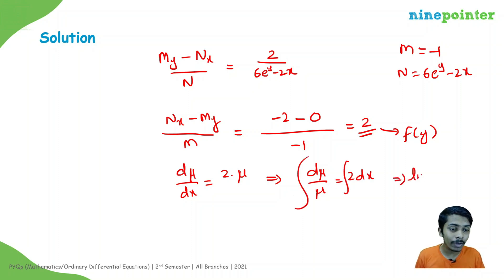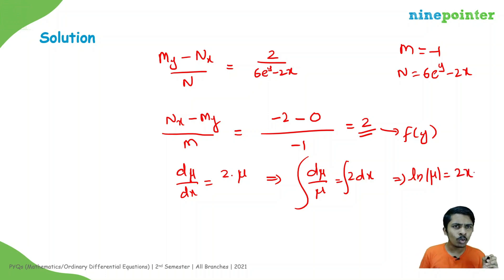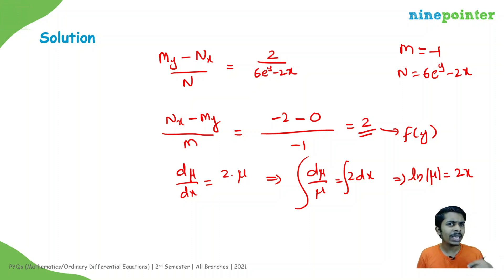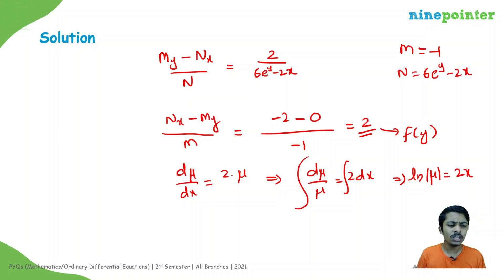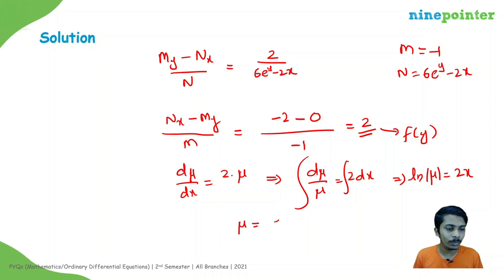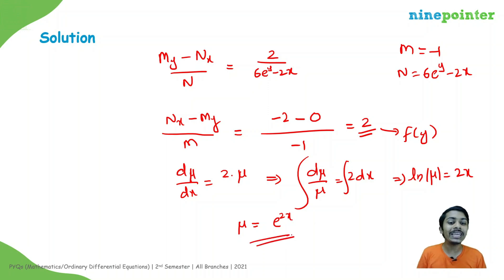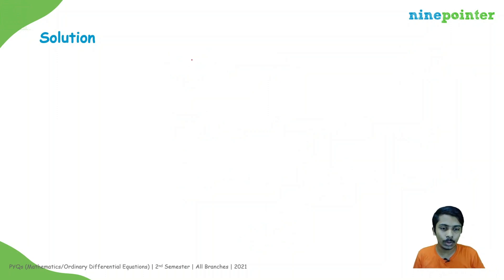Using dμ/dy = 2μ, we solve by variable separable: dμ/μ = 2 dy. Integrating both sides gives ln|μ| = 2y, so the integrating factor is μ = e^(2y). We don't need a constant here since any integrating factor suffices.